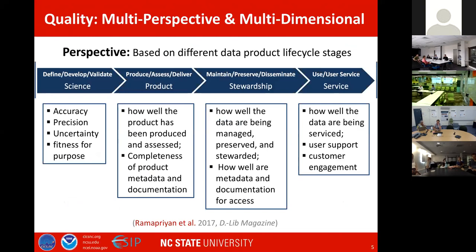One can also look at data quality based on different data product lifecycle stages. As Jackie mentioned, in Rama et al. 2017 IQC paper in Digital Laboratory Magazine, we categorized data and information quality into four dimensions: science quality during the defining, developing, and validating stages; product quality during the producing, assessing, and delivering stages; stewardship during the maintaining, preserving, and disseminating stages; and service quality for data use, user support, and services.